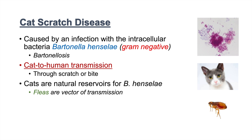Fleas are actually a vector of transmission — fleas can pass Bartonella henselae from cat to cat. So if a cat is an indoor cat that has never been outside and has never been exposed to fleas, it is less likely to carry this bacteria.